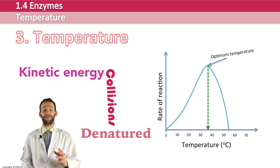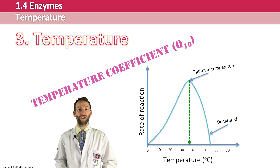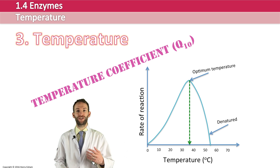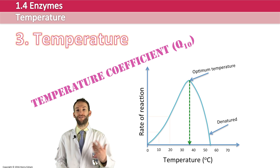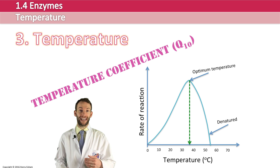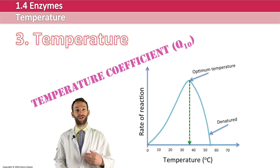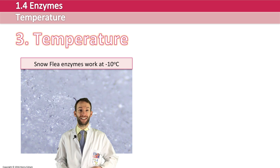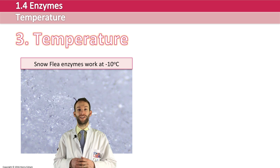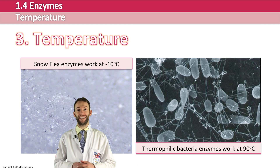You can show the effect of temperature on a reaction mathematically by looking at something called the temperature coefficient or Q10. This basically shows how much the rate increases as you go up by 10 degrees. For most reactions, Q10 equals 2 — every time you go up by 10°C, the rate of reaction doubles. However, once you get to that optimum temperature, this is no longer the case. In most human enzymes, the optimum temperature is about 40°C. There are some organisms whose enzymes can work at really extreme temperatures, such as the snow flea at about minus 10°C, or thermophilic bacteria at about 90°C.